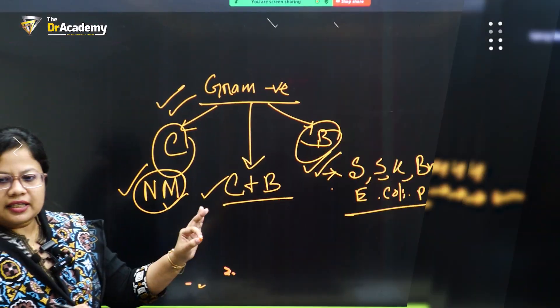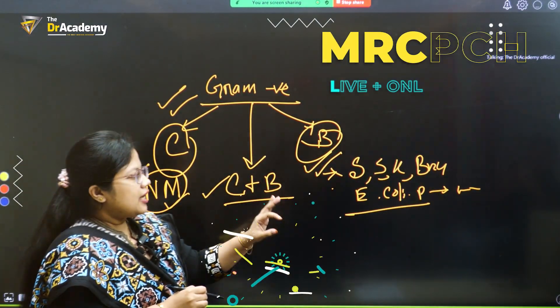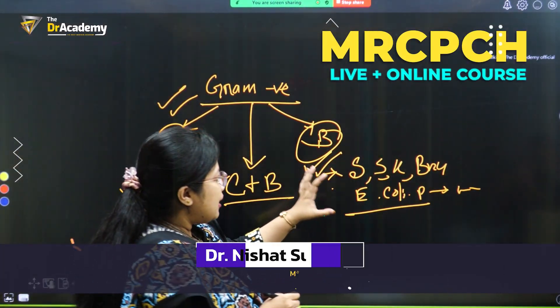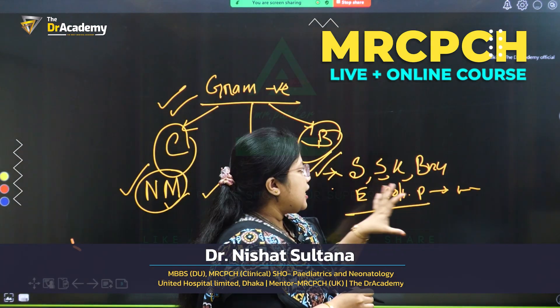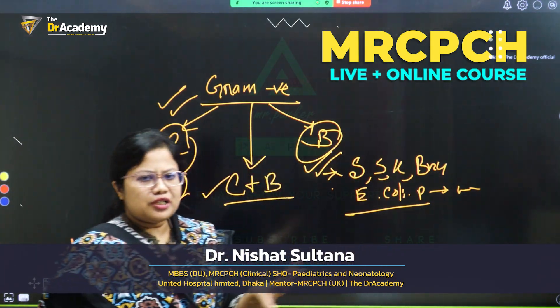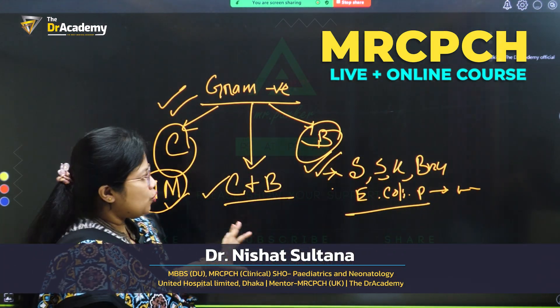Especially start with the ELA — that is Salmonella, Shigella, Klebsiella, Brucella, E. coli, Pseudomonas, and so on.